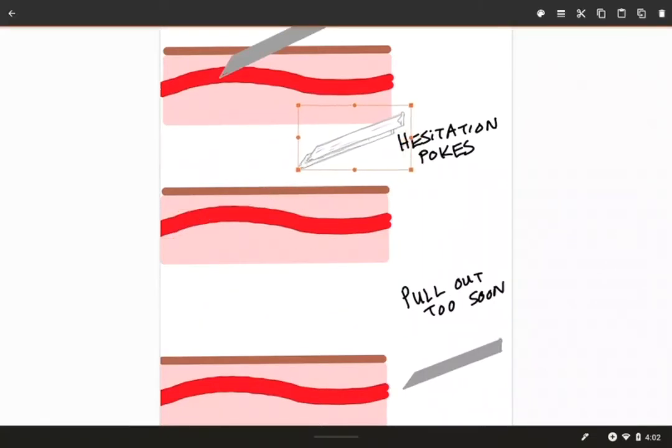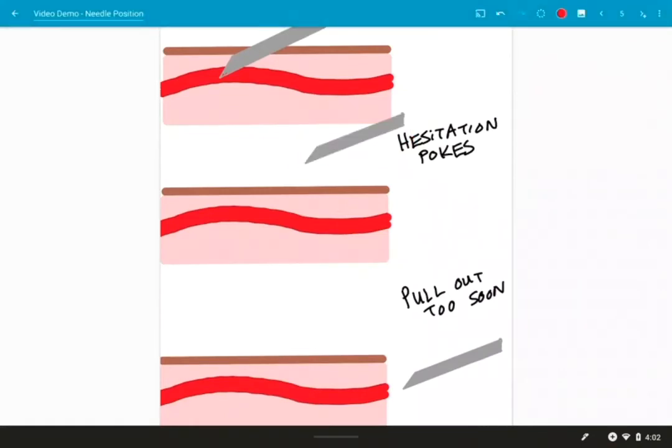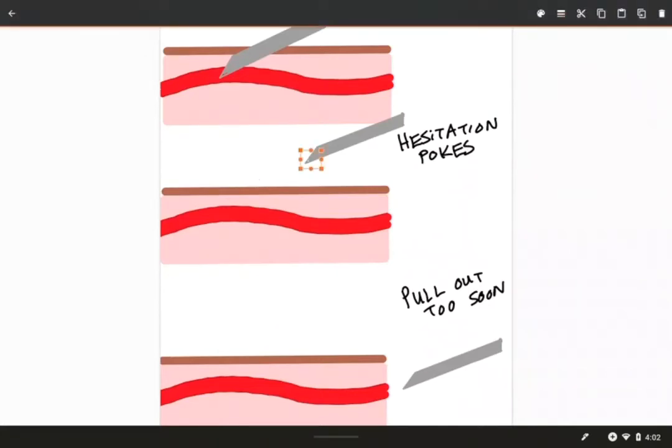Now let's say you are at the appropriate distance. When you're going into a vein, you want to be about maybe a quarter inch, half inch, an inch, away from the site that you're going to go into, because that will avoid shaking hands doing those hesitation pokes.